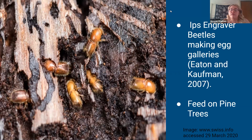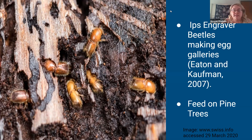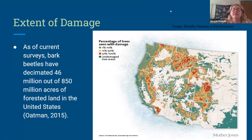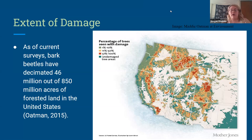This is a picture of an Ips engraver beetle making egg galleries — beetles going into the tree to mate. These specific beetles feed on pine trees. As of current surveys, bark beetles have decimated 46 million out of 850 million acres of forested land in the United States. If you look at the picture provided, the turquoise color is the percentage of undamaged trees — there's very, very little of that. Whether it's 1%, 51%, or 100%, these beetles have affected forests by decimating certain tree populations almost everywhere in the Western United States.